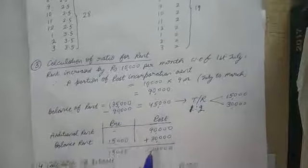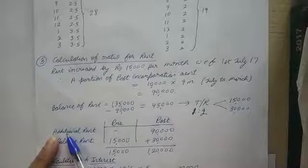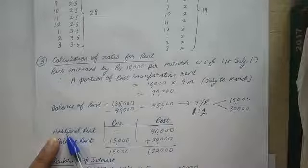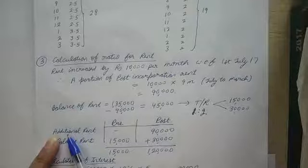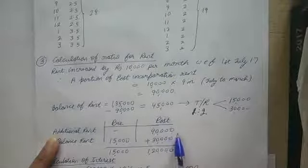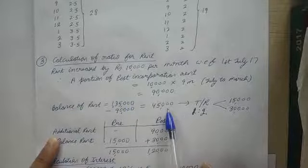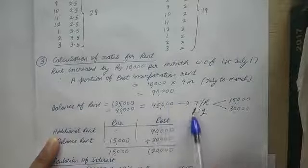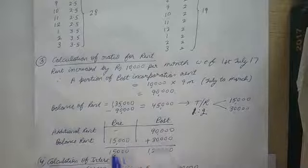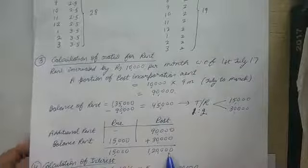Looking at how pre and post rent will be allocated: after applying the time ratio split of 1:2 to the ₹45,000 balance, we get pre-incorporation rent of ₹15,000 and post-incorporation rent of ₹1,20,000. I will write these figures in my answer.